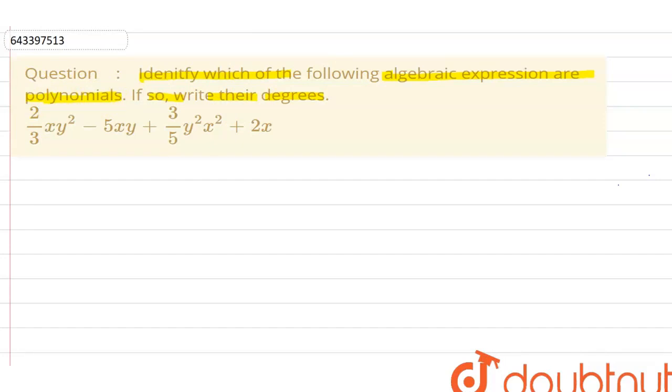So the meaning of polynomial - polynomial has always more than two terms. As we are seeing, one term, two term, three term, four term. So this expression satisfies the condition of polynomial.